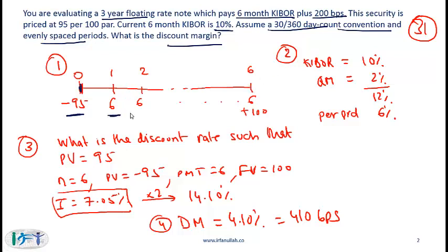Step two is figuring out the coupon payment. Assuming that Kybo remains at 10% and that also is a simplifying assumption that we make in this reading. So Kybo is 10%, the quoted margin is 200 basis points which is 2%. So the overall annual rate is 12% but this is a semi-annual security.